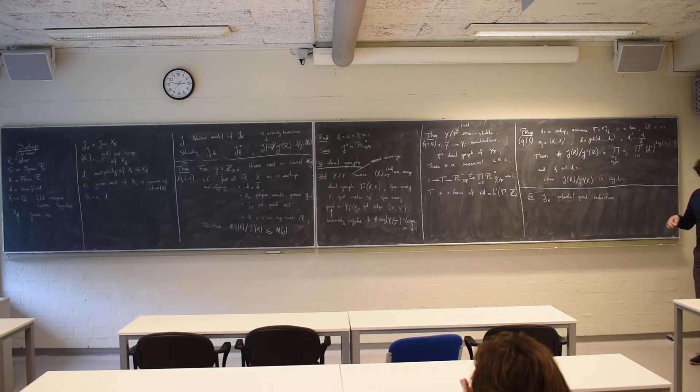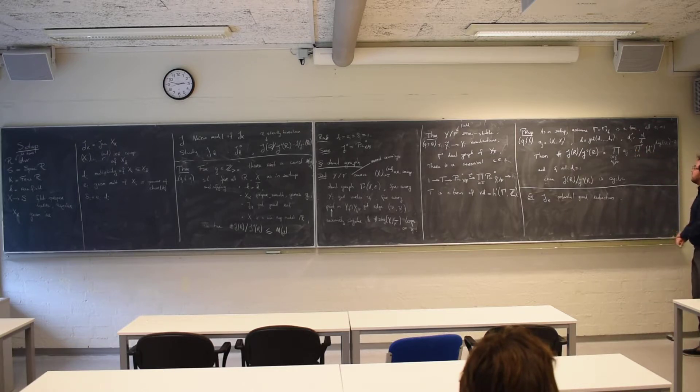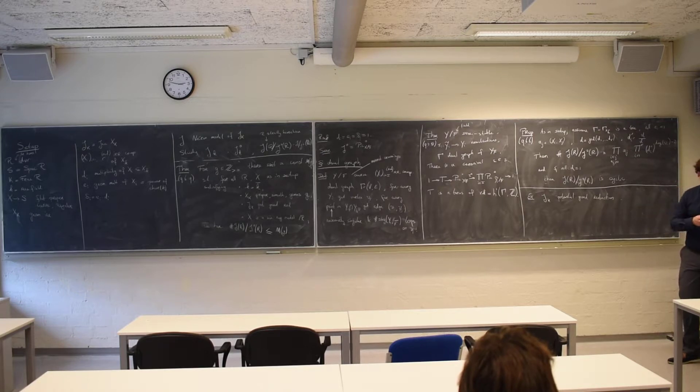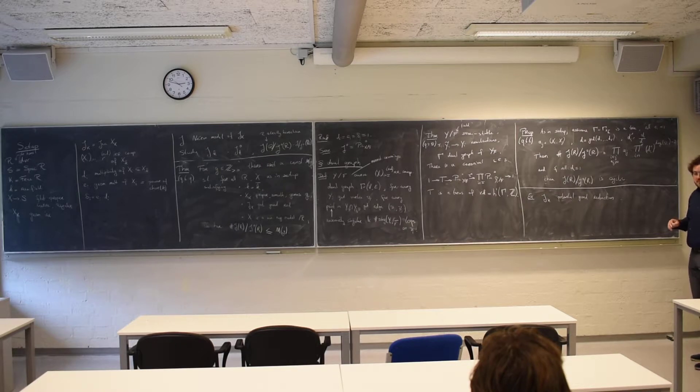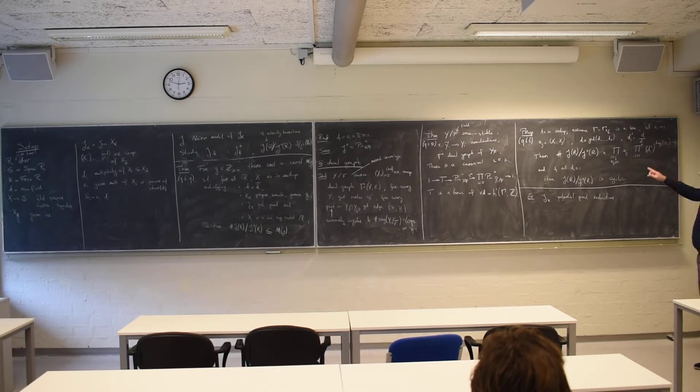It basically goes by induction, where you take away the leaves of the tree and that allows you to do very convenient Gaussian elimination on the intersection matrix. Because the leaf only intersects one other component, so then we can get the rank down. And that allows you to do this.